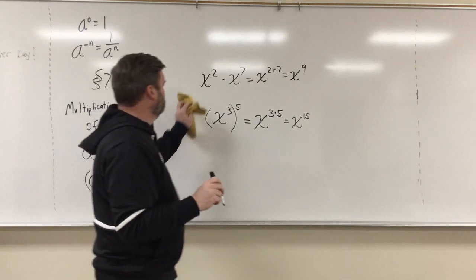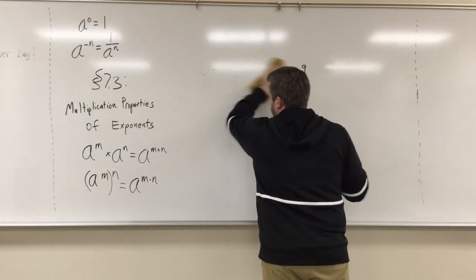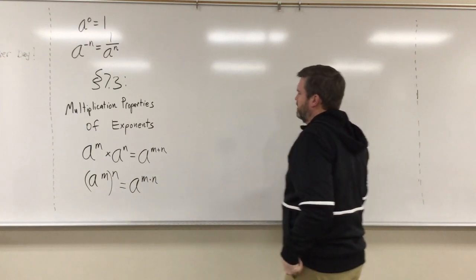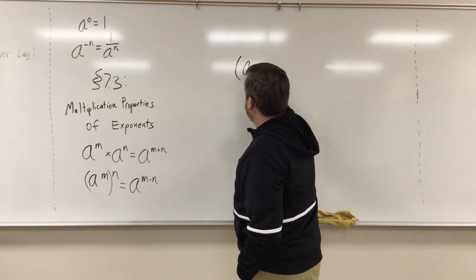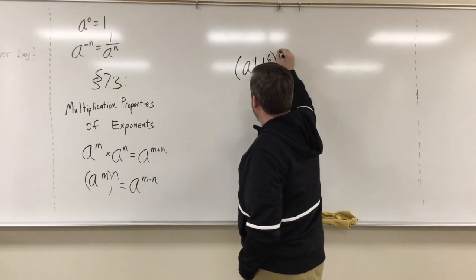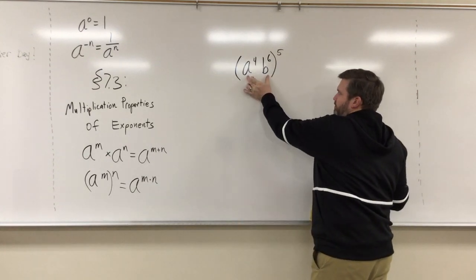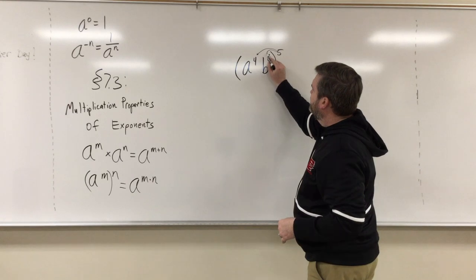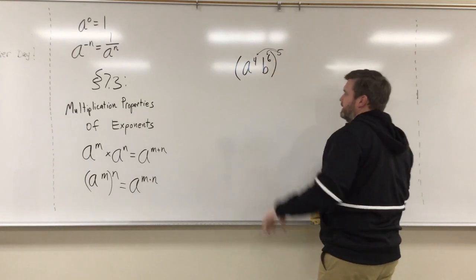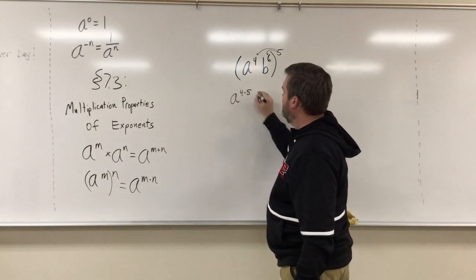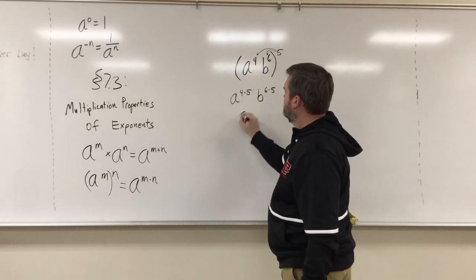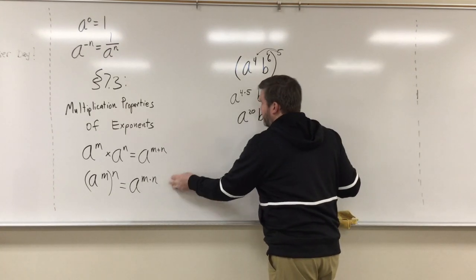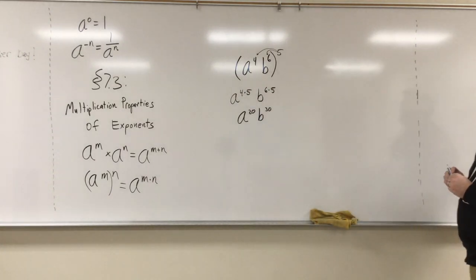This might look like a different rule, but you can use the power-to-a-power rule and make it almost look like you're using the distributive property — that's kind of cumbersome to say without an example. But if we had something like (a to the fourth b to the sixth) all that to the fifth, well you would use the power-to-a-power rule here and here. It's not the distributive property but it kind of looks like it: that would be a to the fourth times five and then b to the sixth times five — a to the twentieth, b to the 30th. It's that rule but with the volume turned up.